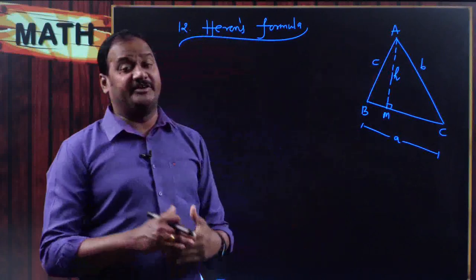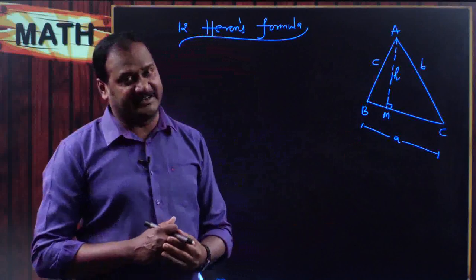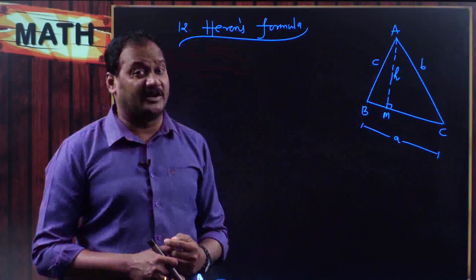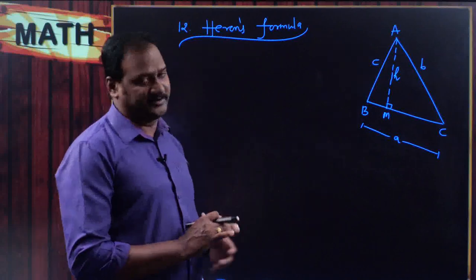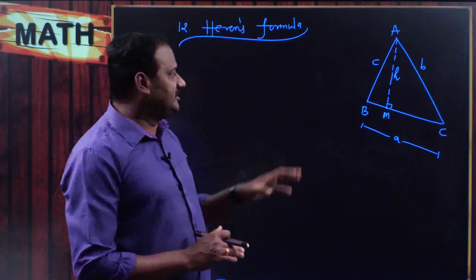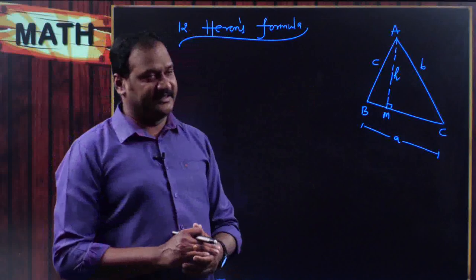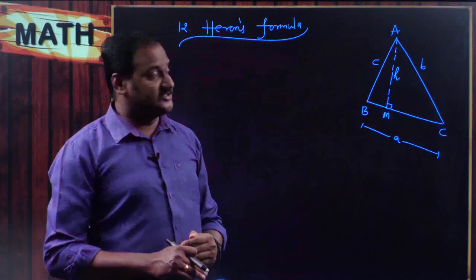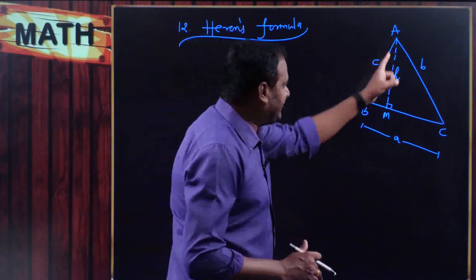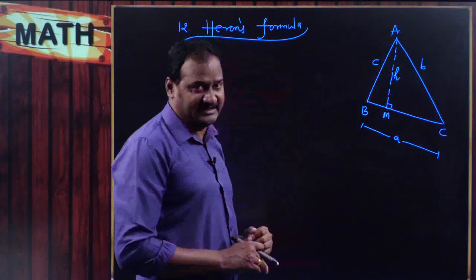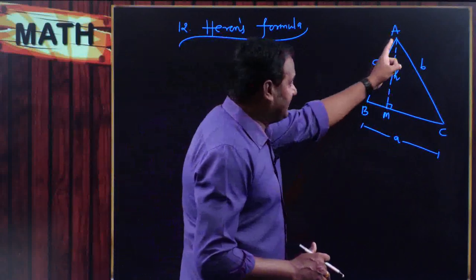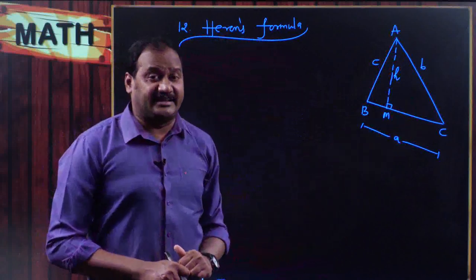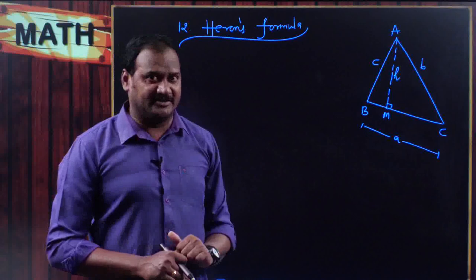But here we do not know what h is. So the primary task is to find the value of small h. If you observe the triangle clearly, triangle ABC has two right-angled triangles within it. The first right-angled triangle is AMB and the second is AMC. Since they are right-angled triangles, we can apply Pythagoras theorem.